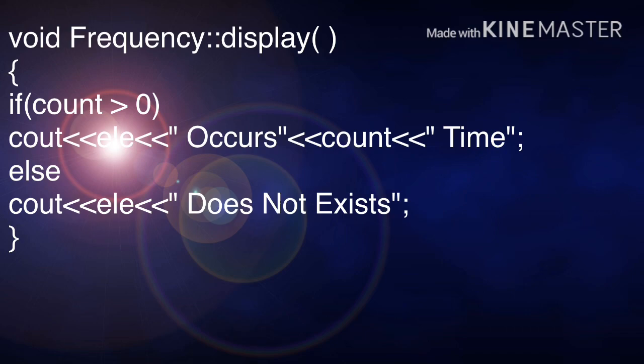So you are going to write cout element. Element is 2 occurs so many number of times. That is count. Count is 3. So 2 occurred 3 times. It will be displayed. In case if count value is less than 0, then it comes to the else part and it prints element does not exist.